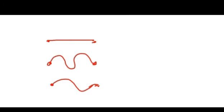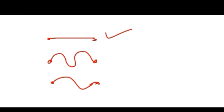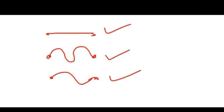Can you see any difference between them? In the first one, there is no bend — the line is drawn straight. In the second and third, there are one or more than one bend. So the line where there is no bend is called a straight line. And where there are bends — one or more — it is called a curved line.